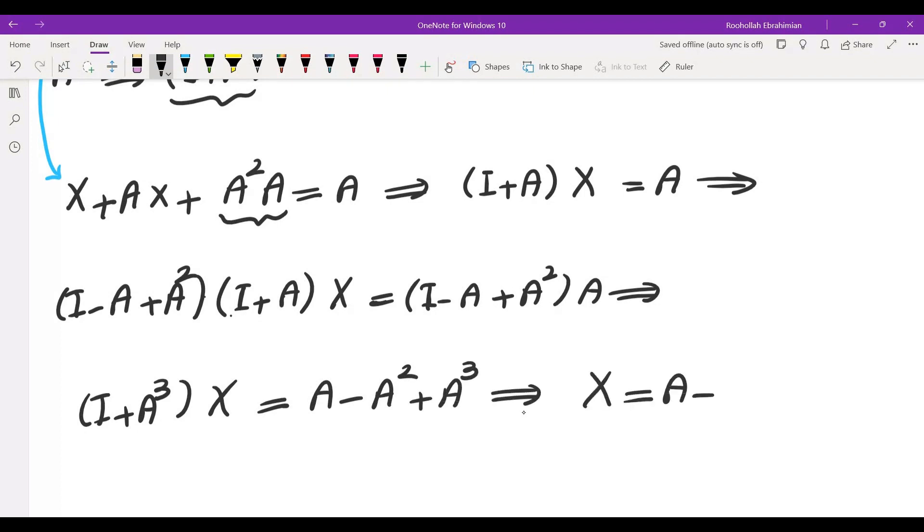So that means X is equal to A minus A squared. We showed A minus A squared is a solution and we showed there are no other solutions.